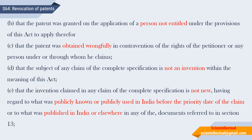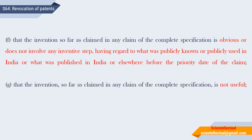Ground D: The subject of any claim is not an invention — that is, it falls under Section 3. Ground E: The invention claimed in the complete specification is not new — that is, not novel — as it has already been publicly known or publicly used in India before the priority date of the claim, or may be published in India or elsewhere. Ground F: The invention so far as claimed in any claim of the complete specification is obvious or does not involve any inventive step, having regard to what was publicly known or publicly used in India or published in India or elsewhere before the priority date of the claim.